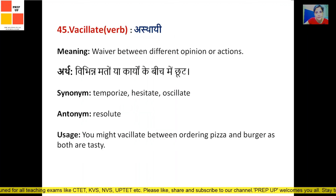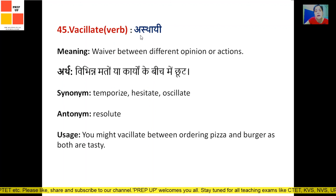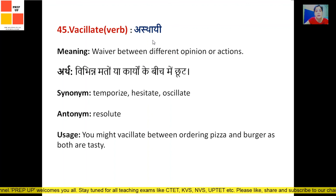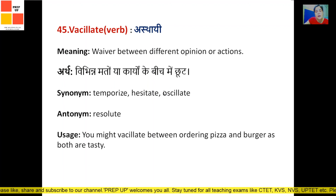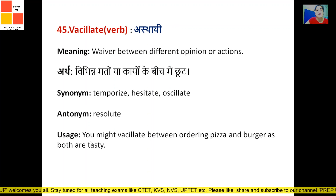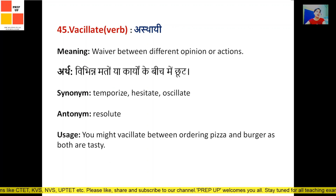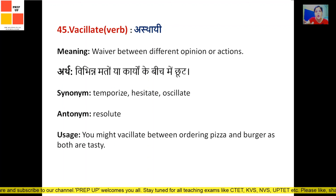Next word is 'vacillate,' a verb. Its Hindi meaning is 'asthai' — temporary or tentative. It means to waver between different opinions or actions — to go back and forth, to oscillate. Synonyms are temporize, hesitate, and oscillate. Antonym is resolute — meaning to reach a firm final decision. Sentence: 'You might vacillate between ordering pizza and burger as both are tasty' — meaning you are not sure what to order. That is to oscillate between two things — that is vacillate.